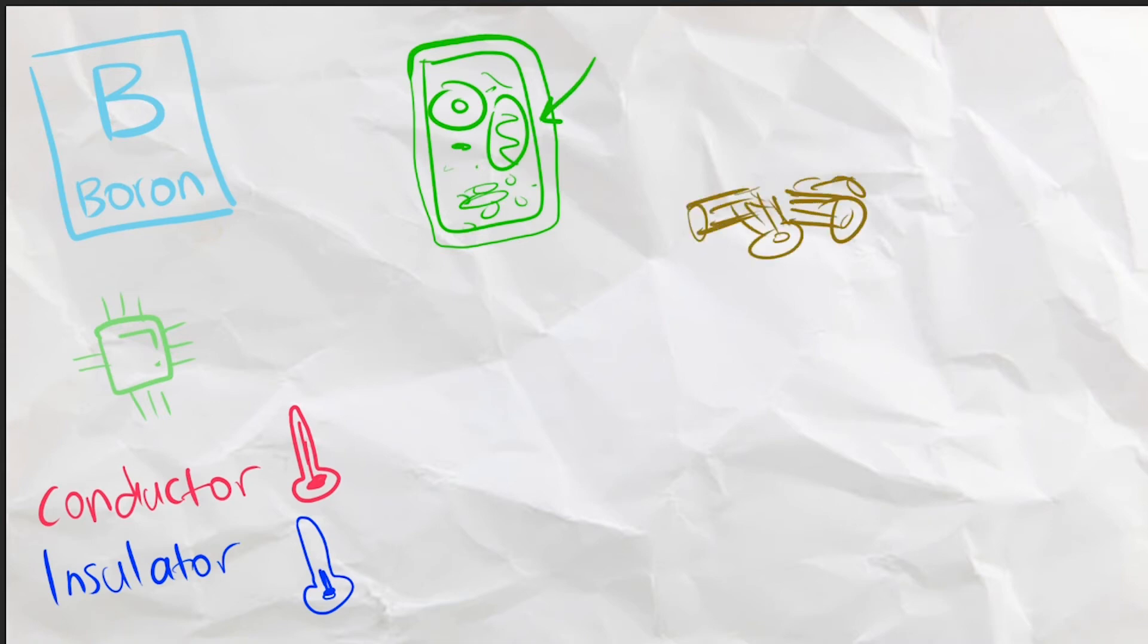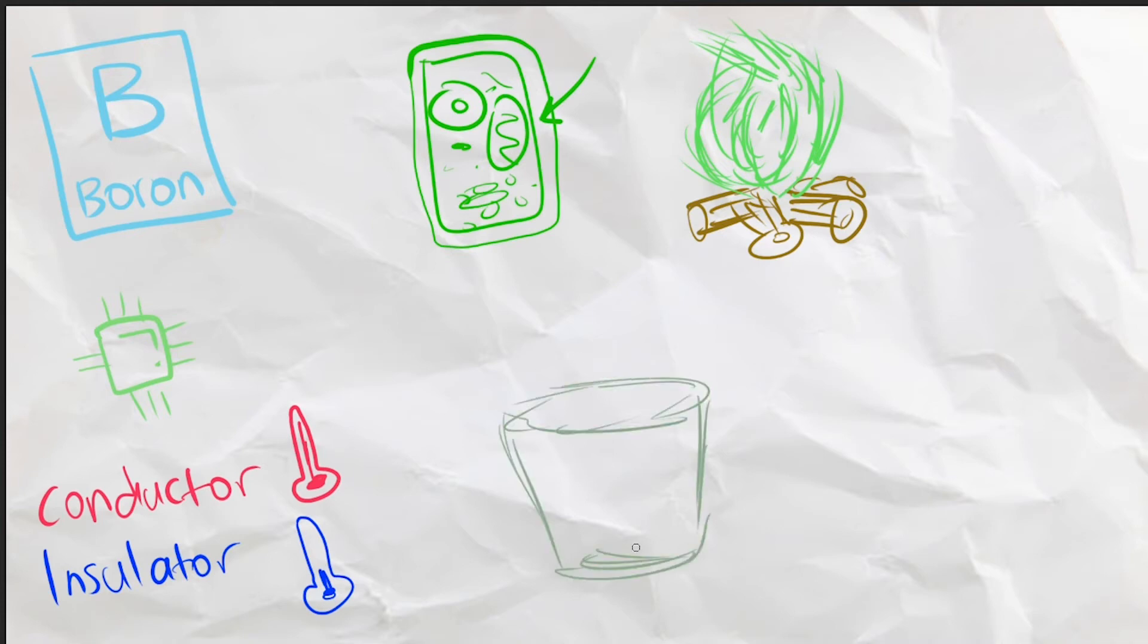Next we have boron, a dark metalloid that is also a semiconductor, which means that it is a conductor at high temperatures, but an insulator at low temperatures. It is an important part of cell walls, and gives off a green flame if ignited. It is used to make heat-resistant glass, most notably Pyrex glass used in labs, and it is also used in soaps and laundry detergents.